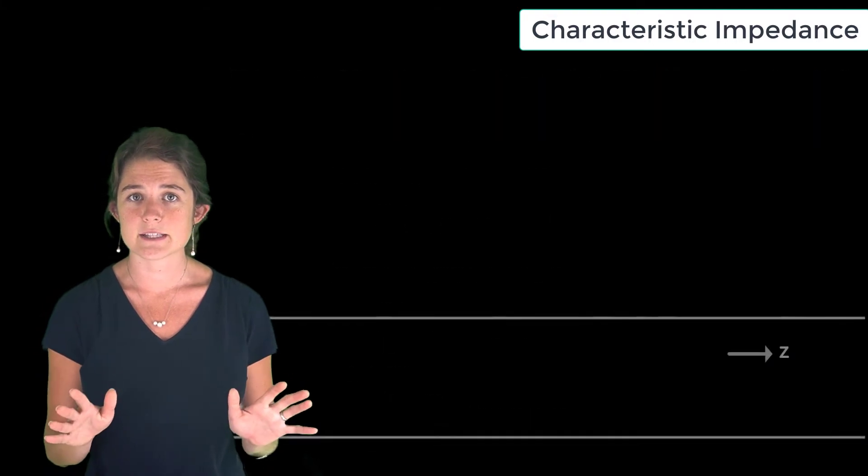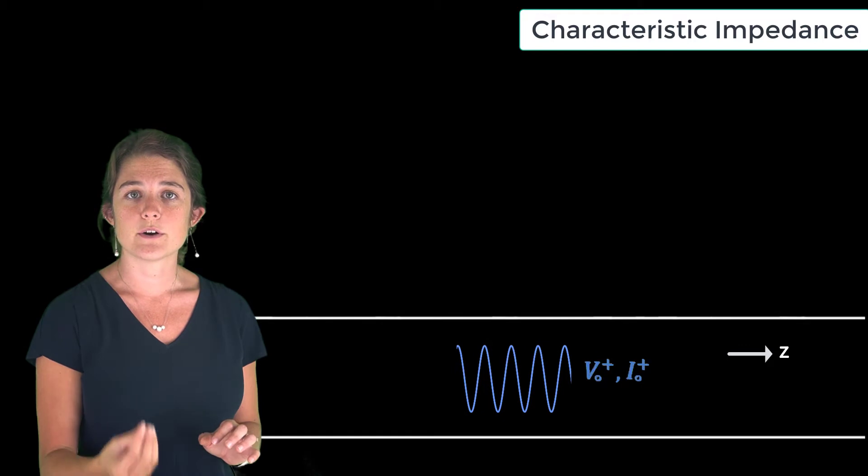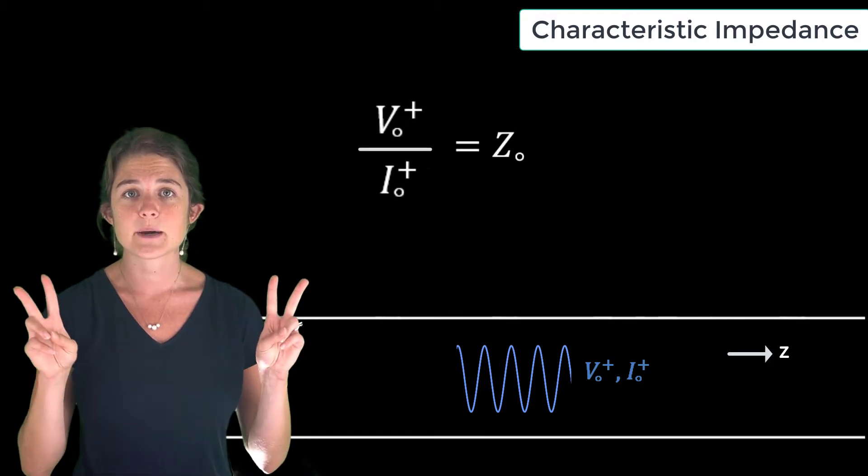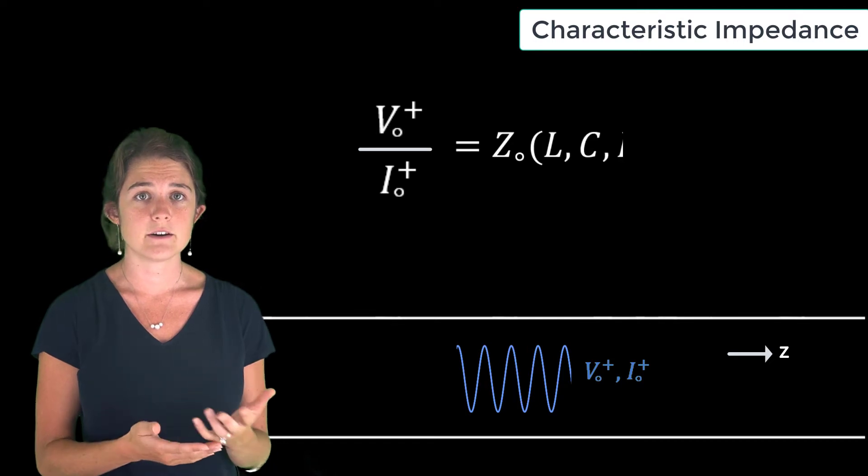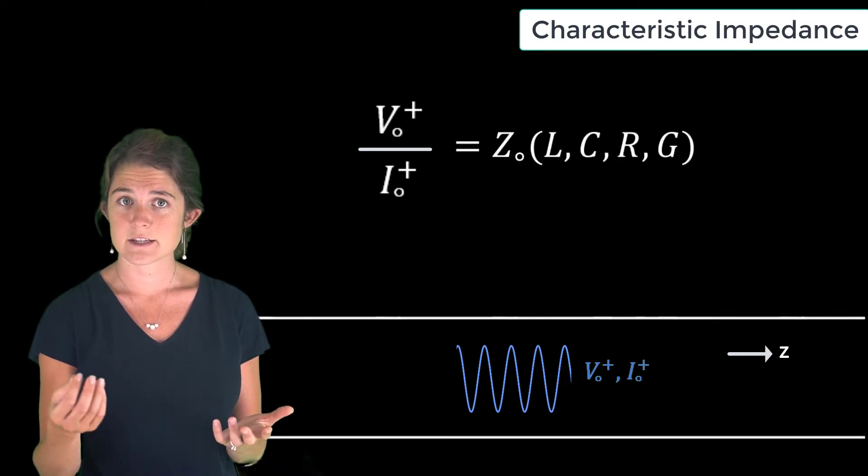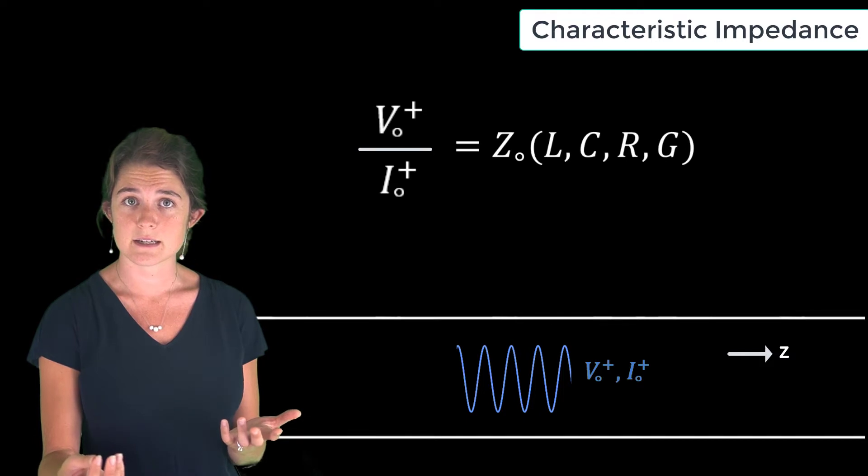It turns out that for any given signal traveling on a transmission line, the ratio of voltage to current is fixed by the characteristic impedance of the line, which is a function of the characteristic inductance, capacitance, series resistance, and shunt conductance of the line.